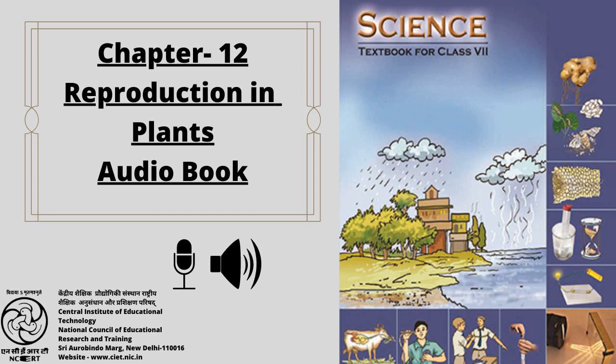Spore Formation: In chapter 1, you learnt that the fungi on a bread piece grow from spores which are present in the air. When spores are released, they keep floating in the air. As they are very light, they can cover long distances. Spores are asexual reproductive bodies. Each spore is covered by a hard protective coat to withstand unfavorable conditions such as high temperature and low humidity. Under favorable conditions, a spore germinates and develops into a new individual. Plants such as moss and ferns also reproduce by means of spores.